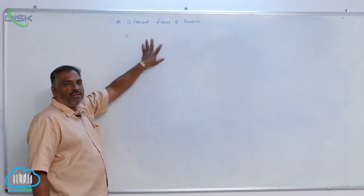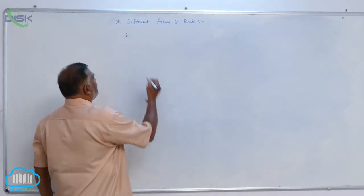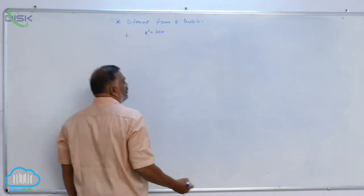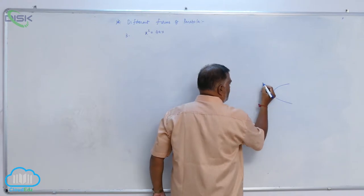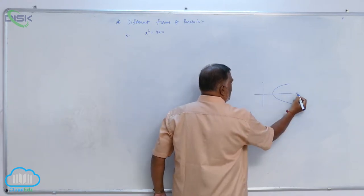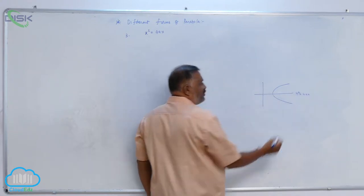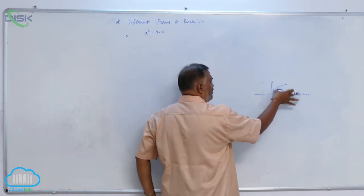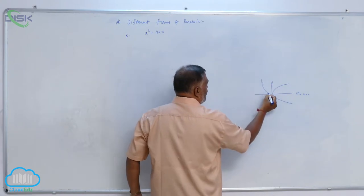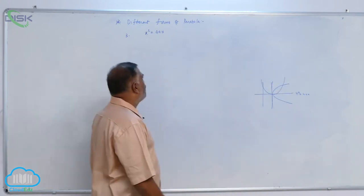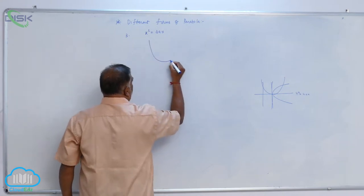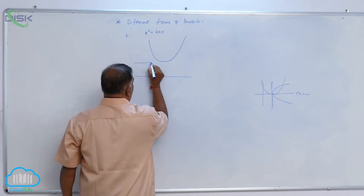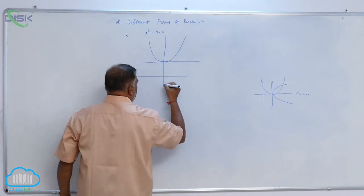We will discuss another form of parabola, that is x² = 4ay. The standard parabola is y² = 4ax. If you rotate it by an angle of 90 degrees, you will get an upward parabola. You can check this out very clearly.